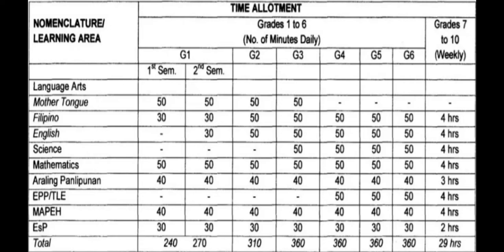The time allotted for EPP or TLE from grade 4 to grade 6 is 50 minutes daily. The MAPE subject has 40 minutes daily from grade 1 to grade 6. And the last subject, ESP, has 30 minutes daily from grade 1 to grade 6.